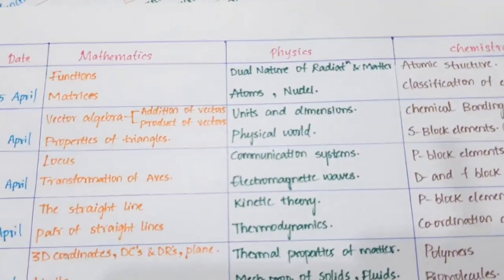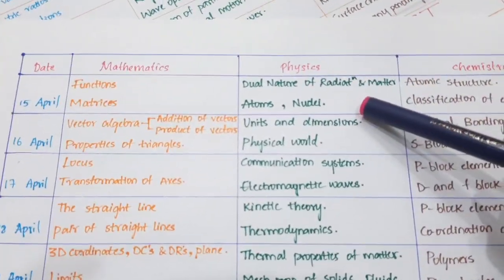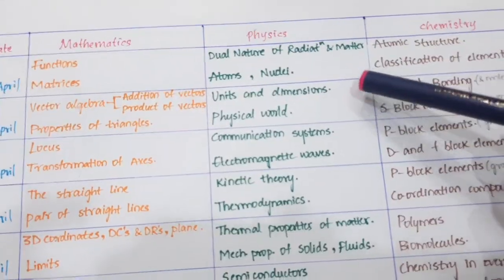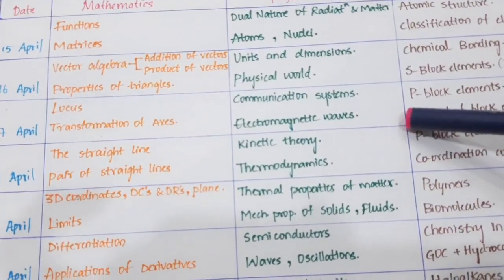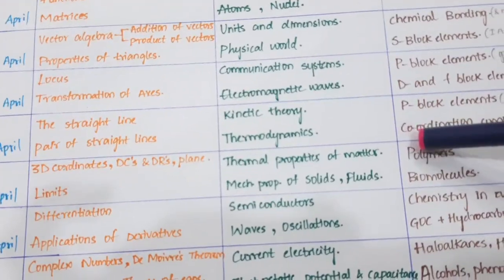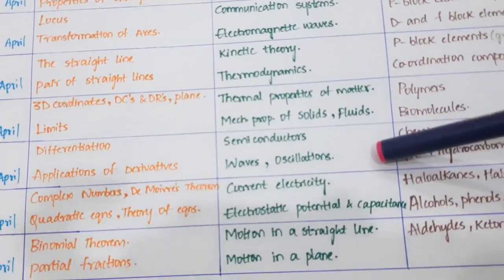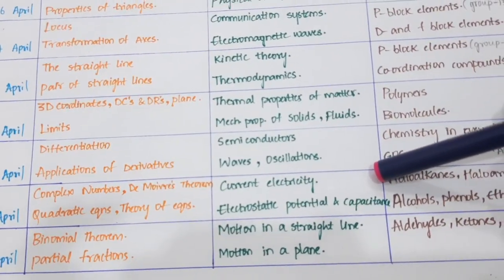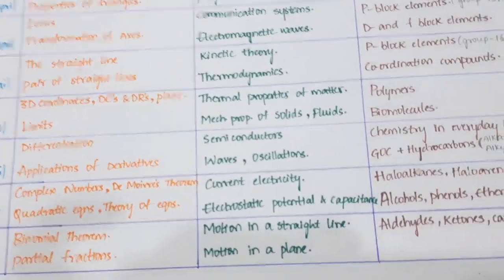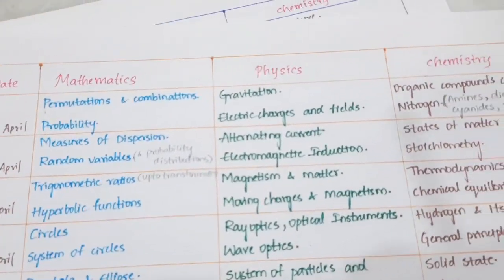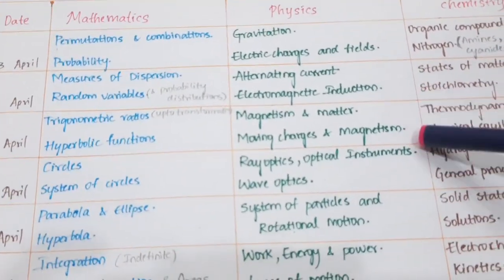Now physics. April 15th: Dual Nature of Matter and Radiation — a very easy chapter. 16th: Units and Dimensions, Physical World. 17th: Communication Systems and Electromagnetic Waves. 18th: Kinetic Theory of Gases and Thermodynamics. 19th: Thermal Properties of Matter, Mechanical Properties of Solids and Fluids. 20th: Semiconductors, Waves, and Oscillations. 21st: Current Electricity and Electrostatic Potential and Capacitance. 22nd: Motion — straight line motion and planes. 23rd: Gravitation and Electric Charges and Fields.